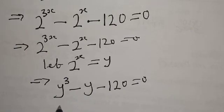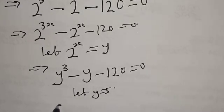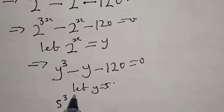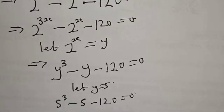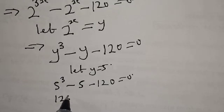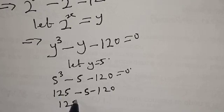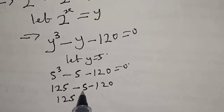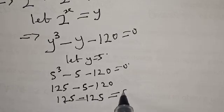Let's factorize. We need to get one of the roots. Let's say let y equal to 5. Then 5 raised to power 3 minus 5 minus 120 must equal 0. Let's confirm: 5 raised to power 3 is 125, minus 5 minus 120 gives minus 125. So 125 minus 125 is equal to 0. Confirmed.